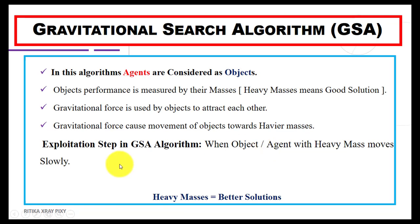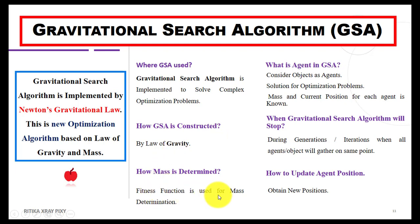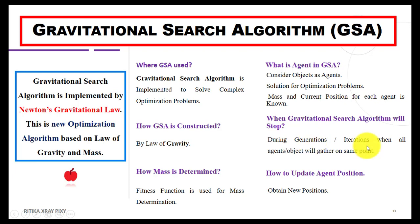The force causes movement of objects toward heavier masses, and when the object or agent with heavy mass moves slowly, that is the exploitation step in the GSA algorithm. Important questions: Where can we use this algorithm? To solve complex optimization problems. How is this algorithm constructed? By the law of gravity. How do we calculate mass? With the help of the fitness function. What is a search agent? Objects that represent solutions for the optimization problem and know their current position. When does GSA stop? When all objects gather at the same point.